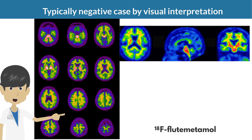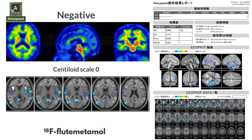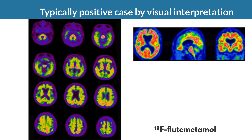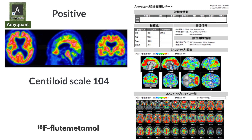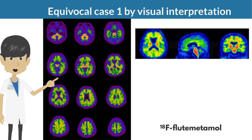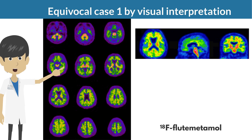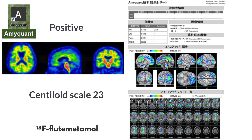A flutemetamol PET of a visually obvious negative case shows a centiloid scale of zero. The target VOI is indicated by a white line in the tomogram of the Z-score map; regions with a Z-score of 2 or higher are shown in color but are not included in this target VOI. A visually obvious positive case shows a centiloid scale of 104. An equivocal case shows no focally increased accumulation but somewhat diffuse cortical increase; the centiloid scale is 23, and posterior cingulate gyrus, precuneus, and medial frontal cortex show significantly increased accumulation on the Z-score map, suggesting amyloid positivity.